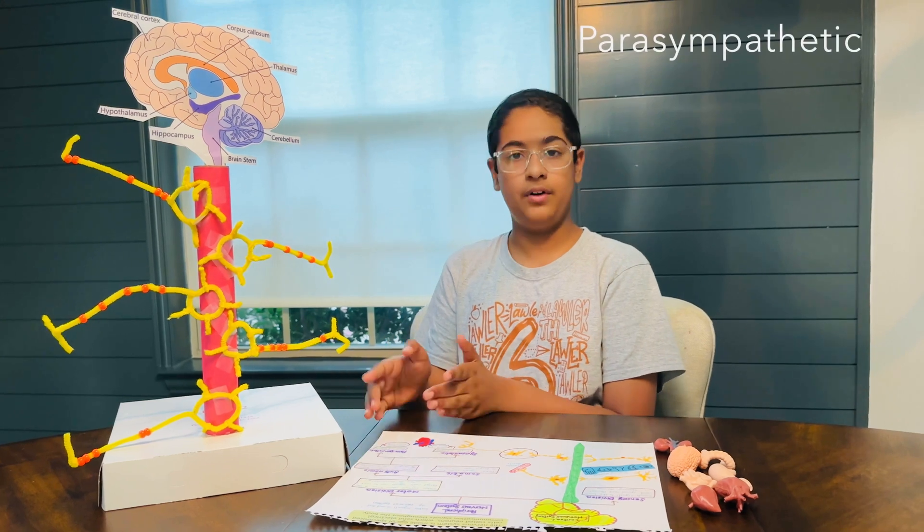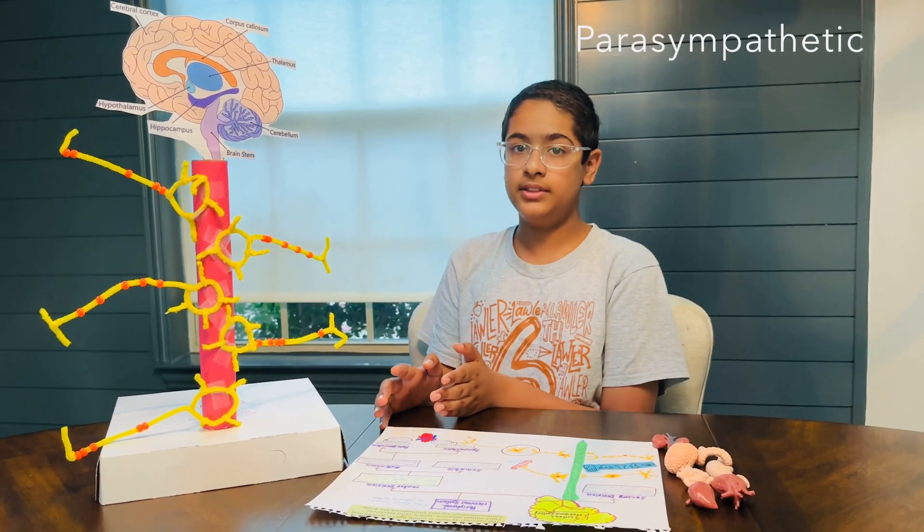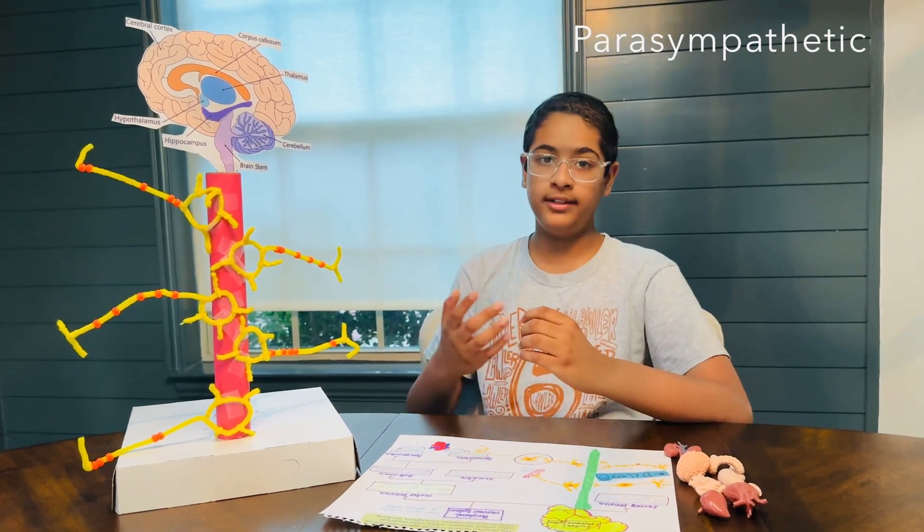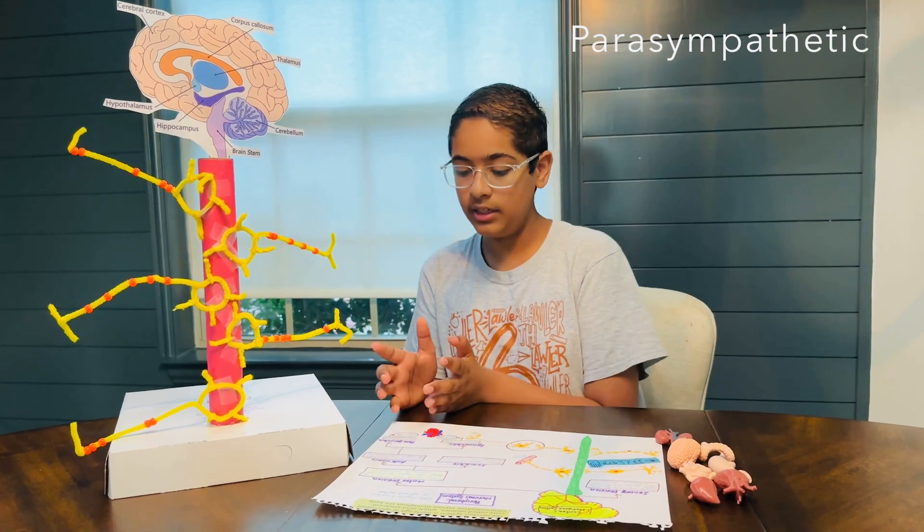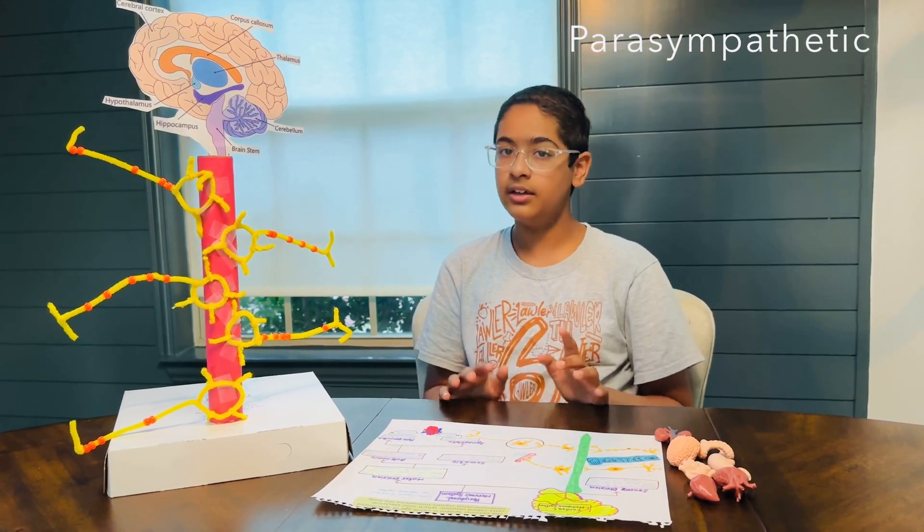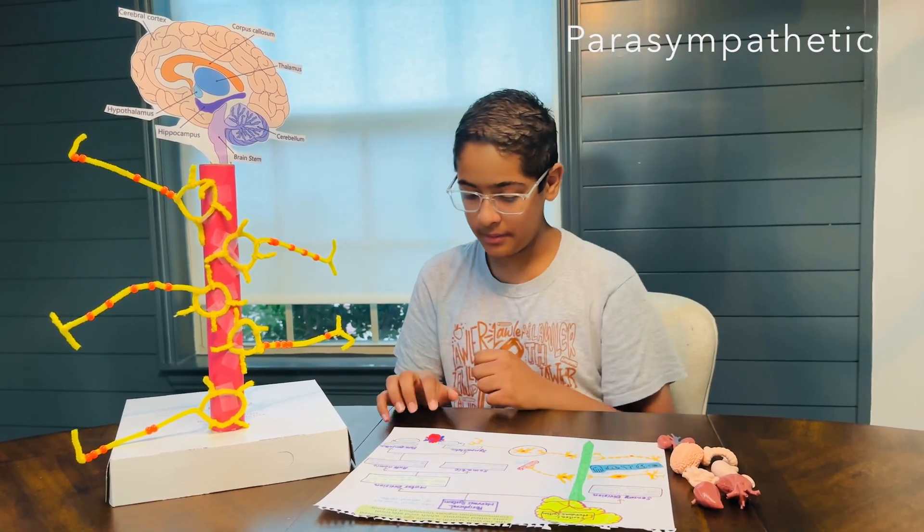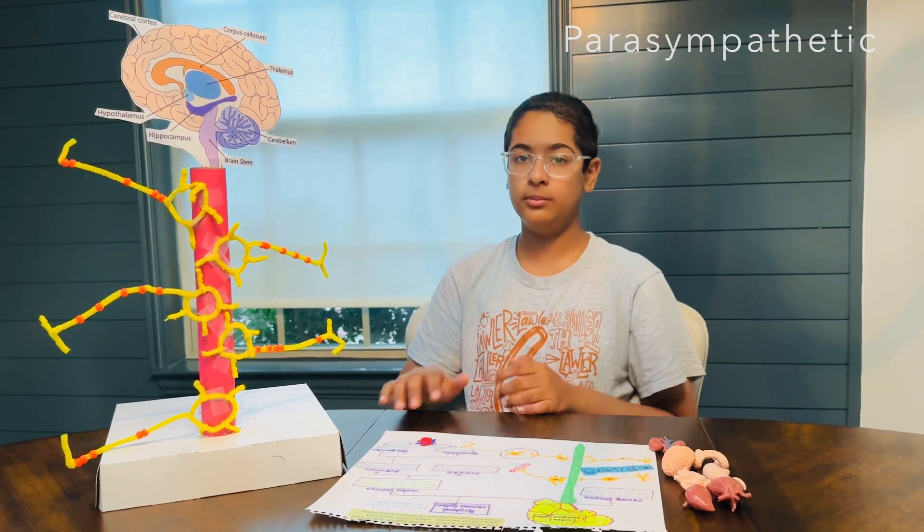Now, the parasympathetic is kind of opposite. It's known as the rest and digest. Basically, in the sympathetic one, our heart rates and our organs, they move much faster than normally. But in the parasympathetic, where we're resting, the organs move much less faster and they slow down compared to normal and move to the normal speed.